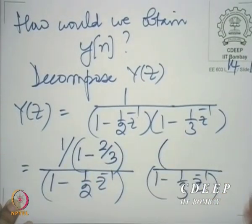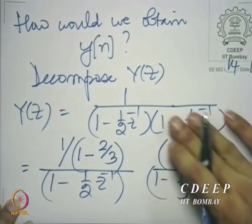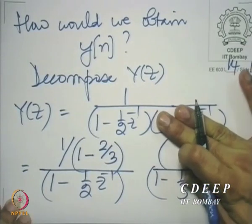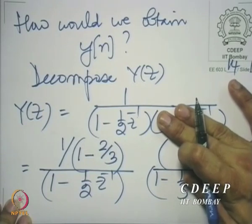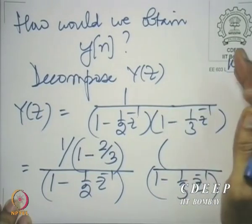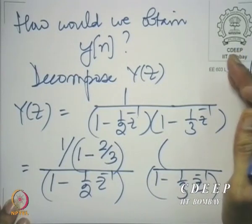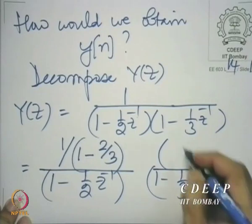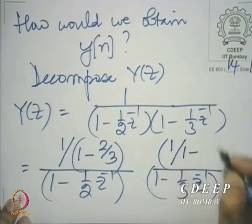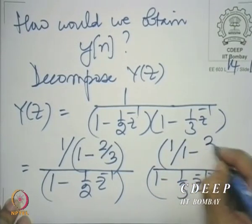For the second coefficient, I would use the same idea. I would multiply this by (1 minus one-third z-inverse) and put z equal to one-third. So z-inverse is 3. So there we are: 1 by (1 minus 3 by 2).